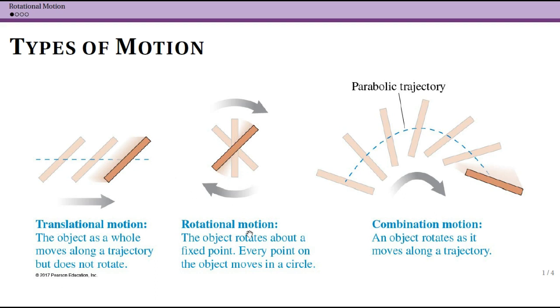Now these are the two primary types of motion. It's possible to combine them together. Combination motion is really common—this is what we have for many objects around us in real-world situations. A good example is an object tossed through the air. In this case, it's this bar, but you could also imagine, for instance, a hammer is another good example.